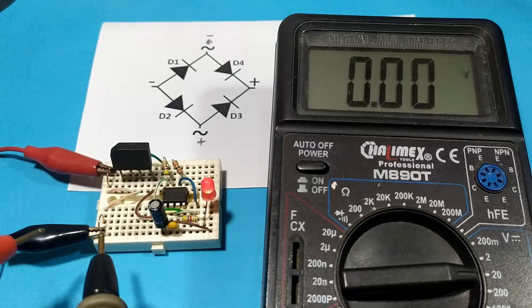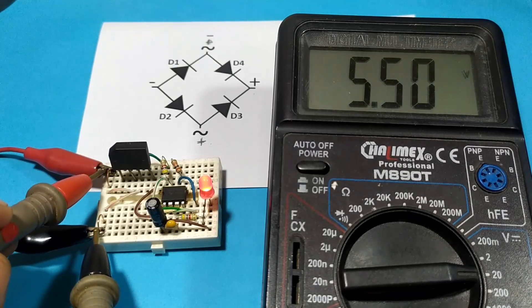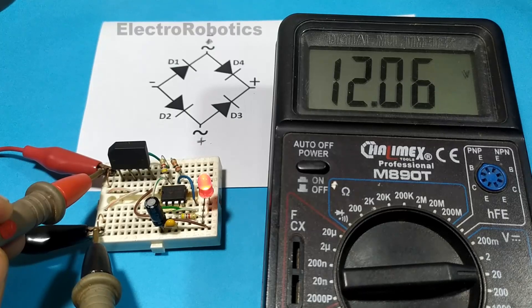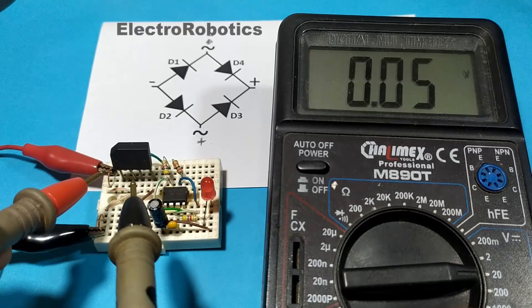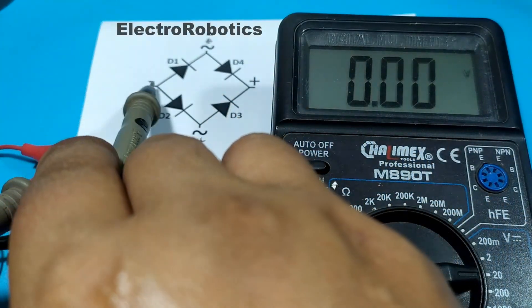Alright guys. Let's do some measurements first at the voltage input. We measure the input. There we have 12 volts. Now we are going to measure the voltage output between positive and negative.